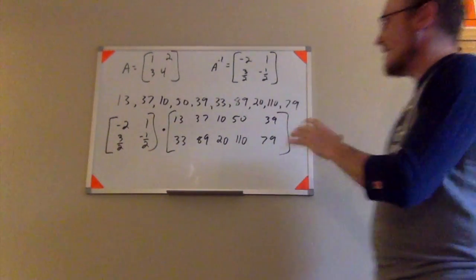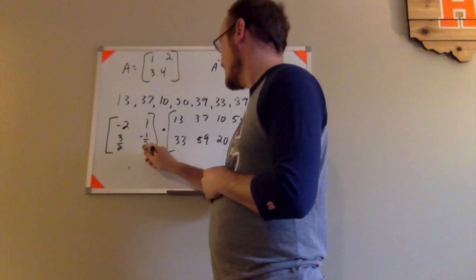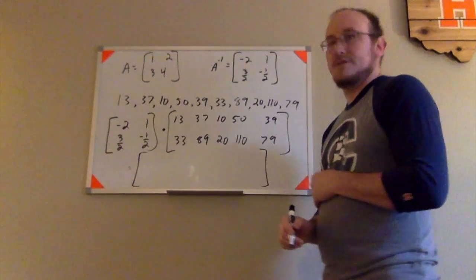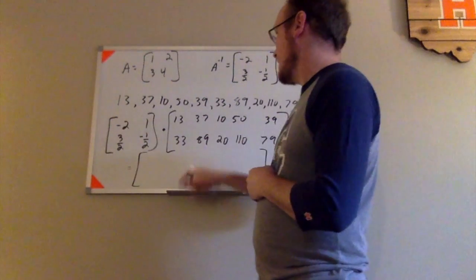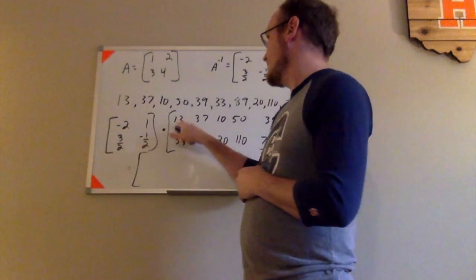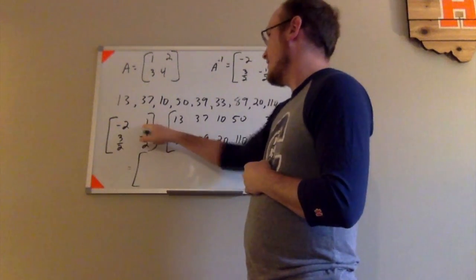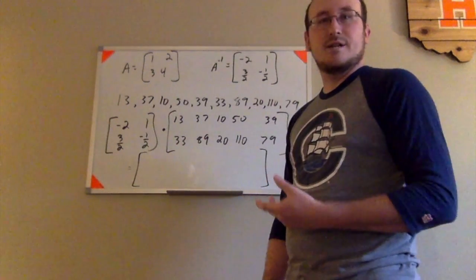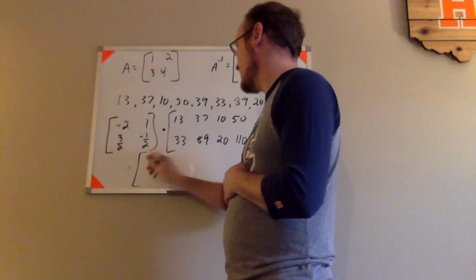So now I have to go ahead and perform matrix multiplication to try to decode this message. So I'll start with the first row times the first column. I have negative 2 times 13, which is negative 26. I have 1 times 33, which is 33. Negative 26 and 33, when I add those together, that gives me 7.